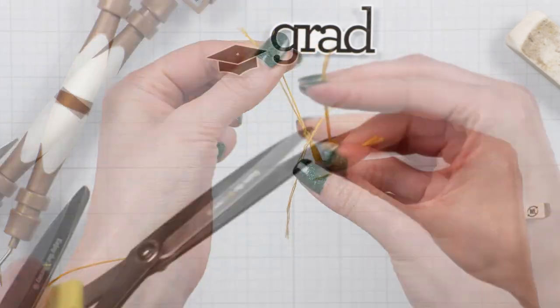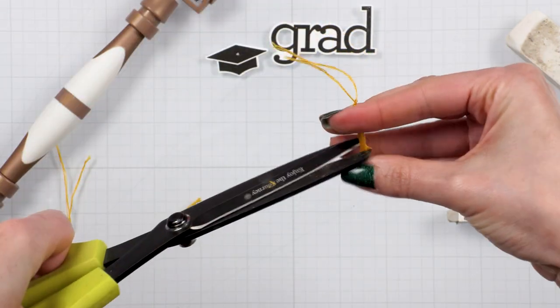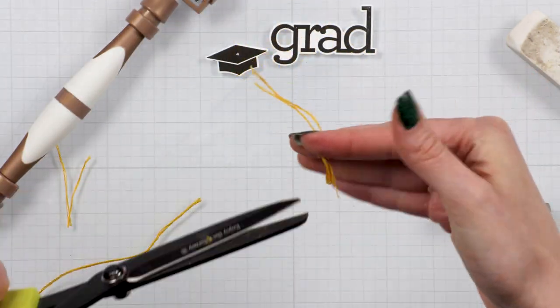Now use your scissors and trim any excess to give the tassel a haircut. And our mini tassel is ready!